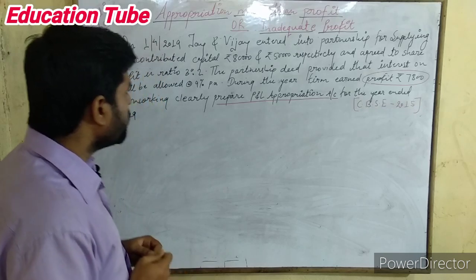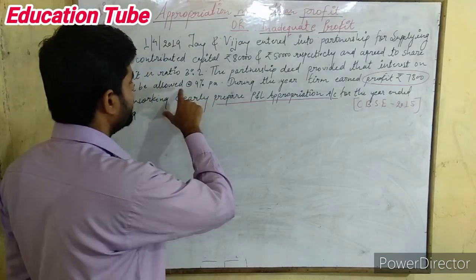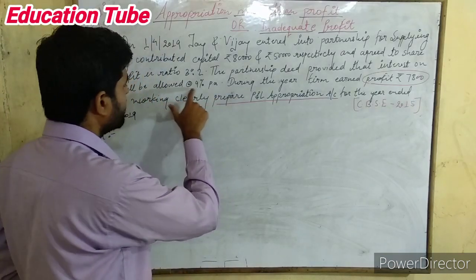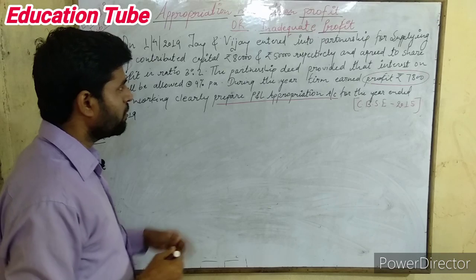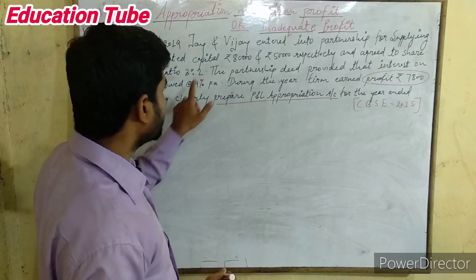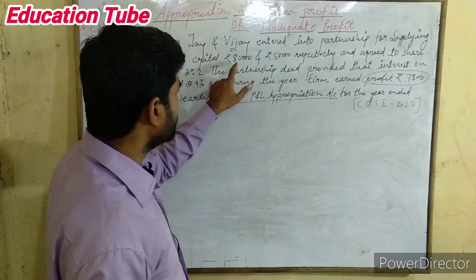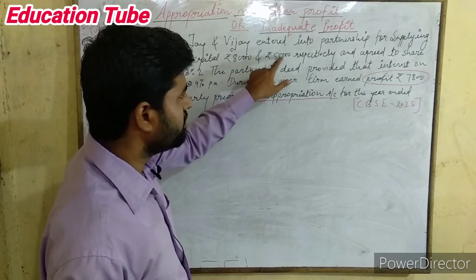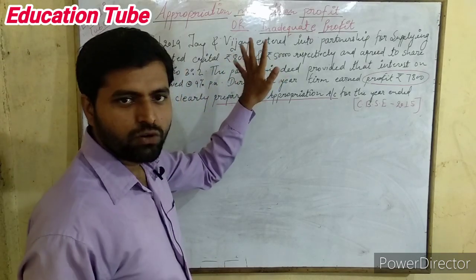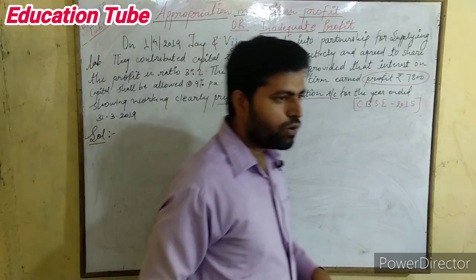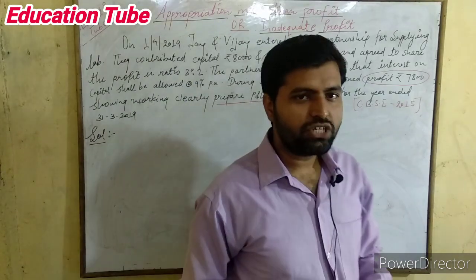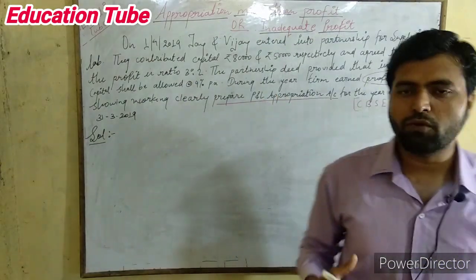Let us summarize the question. The business has earned a net profit of Rs. 7,800. The partners are to get interest on capital at 9% per annum, and their capital contributions are Rs. 80,000 and Rs. 50,000. So how will you come to know that appropriation is more than the profit?